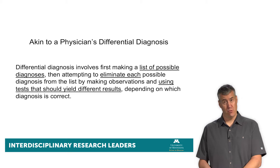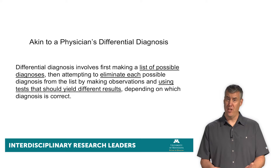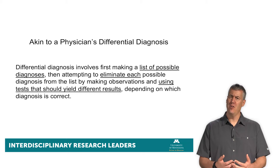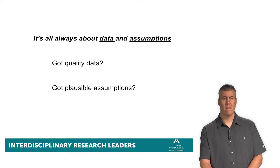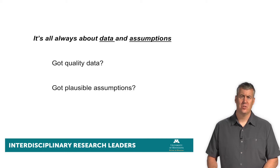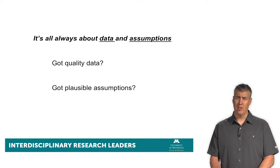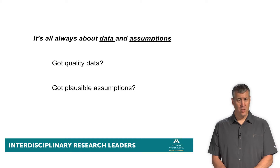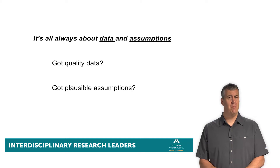We want to improve community health, we want to mitigate disparities, help the kids and the disadvantaged, and all the things we're working on together. What changes it, and what might undermine that conclusion? All this is always going to be about quality data and plausible assumptions. Assumptions and data always come together. So when we can do good effect identification, we have plausible assumptions, no competing explanations, and hopefully quality data.